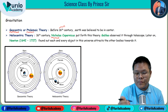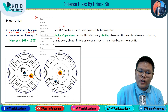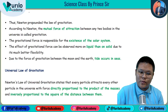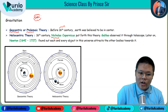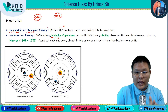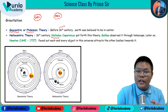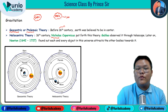Geocentric means Earth is at the center — 'geo' means Earth. Heliocentric — you know helium gas is found in the sun, so 'helio' is related to the sun. So heliocentric means the sun is at the center.